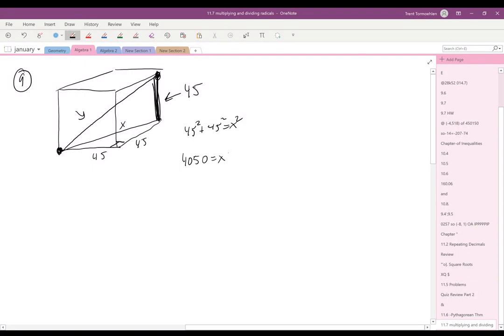45 squared plus 45 squared equals 4050. Now, I will say, this just turns out to be the same as 45 root 2, or you can take the square root of it using your calculator, which turns out to be 63.6396103.